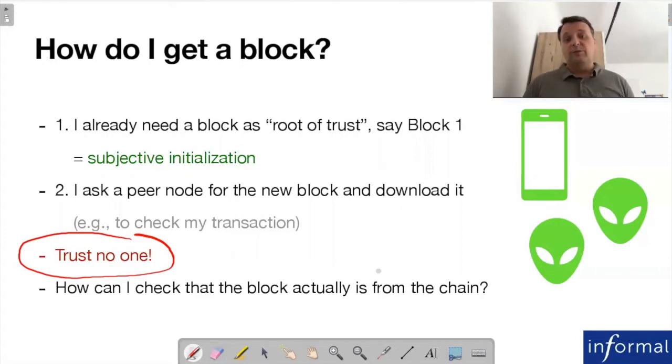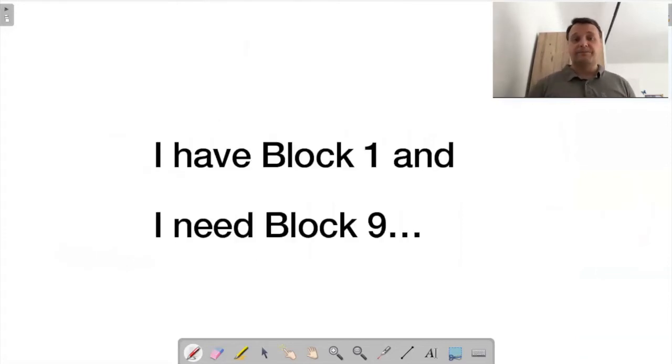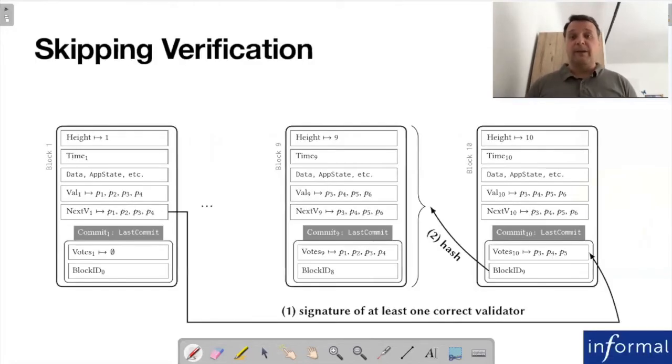In the light client, you have some trusted blocks, say block one, and it doesn't matter how you figured out to trust it, but you know you can trust it. Then you want to download another block far on the blockchain. You cannot trust anyone, you cannot trust the peers that give you the blocks. You have to use knowledge about this blockchain to figure out whether you can trust the block. The obvious solution would be to download the whole blockchain, check all the digital signatures, check how many validators voted for each block. But that's too expensive, especially on a mobile phone.